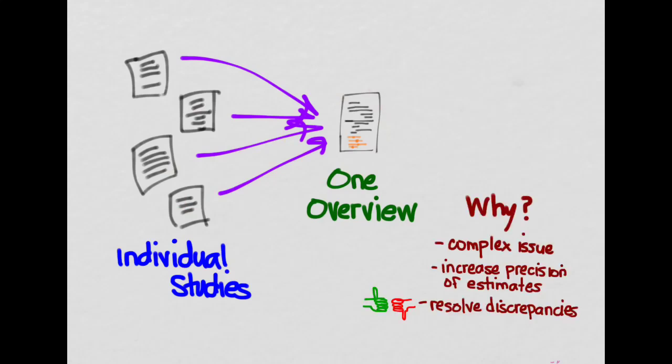Now, why would you want to do a systematic review? Well, perhaps you have a complex issue that has many different papers done on it, and you want to look at all of them in one place and come up with conclusions. Or perhaps you want to increase the precision. Each one of these papers may have a smaller sample size, so it doesn't have good precision, meaning its confidence intervals are huge. By taking a bunch of them, you can put them all together, get a bigger pooled sample size, and increase the precision. Or perhaps there's a lot of discrepancies in the literature. Maybe you have some studies that are for a particular therapy and others that are against it. So you want to take a definitive look at all of them and come up with a conclusion.